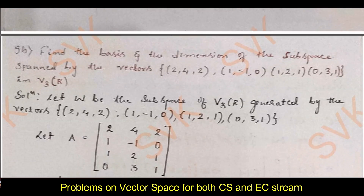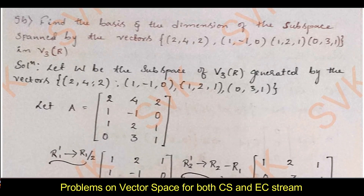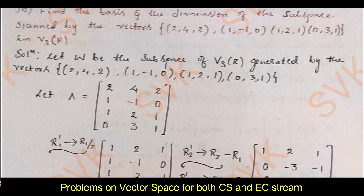Moving on to the next problem: find the basis and dimension of the subspace spanned by the vectors (2,4,2), (1,−1,0), (1,2,1), (0,3,1) in V3 space. They have given a three-dimensional vector space and we need to find the basis and dimension. Consider the given vectors, write them as rows in a matrix. Matrix A is equal to [2 4 2; 1 −1 0; 1 2 1; 0 3 1]. Now I will reduce this to row reduced echelon form (RREF).